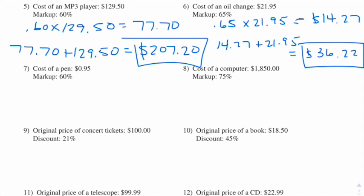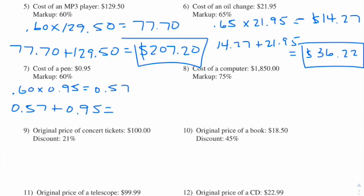Number seven: the cost of a pen is 95 cents and the markup is 60%. So we're doing 0.6 times 0.95 and we end up getting 57 cents. So we do 57 cents plus $0.95.